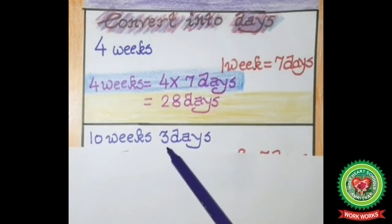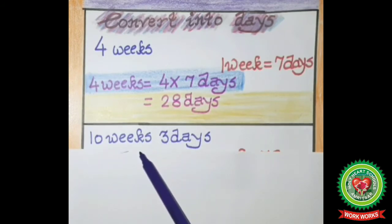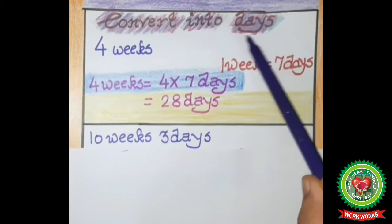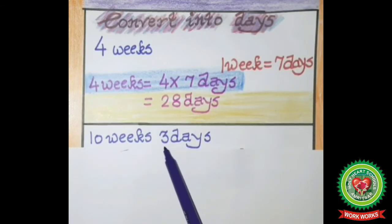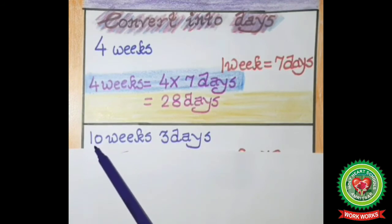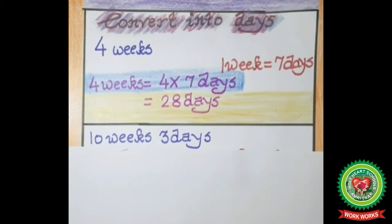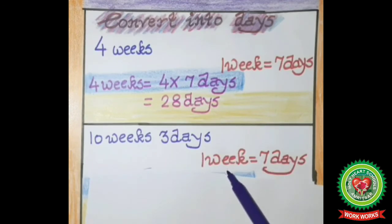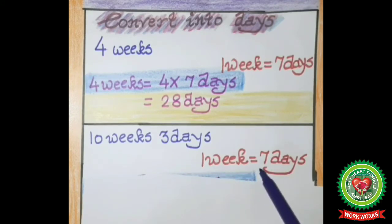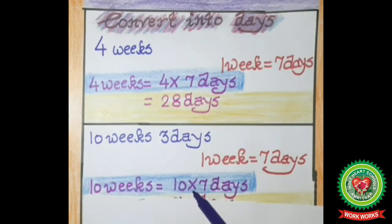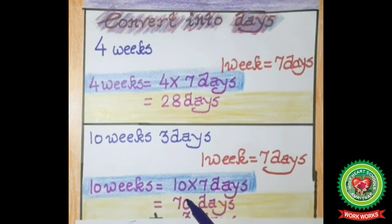Now let's take the second example: 10 weeks 3 days. The statement is given in two units — one is weeks, another is days — and we have to convert the statement into days. Three is already in days, so there is no need to change three. We will convert ten weeks into days. In one week there are seven days, so one week equals seven days. In ten weeks there will be ten multiplied by seven days, that is seventy, because ten sevens are seventy.